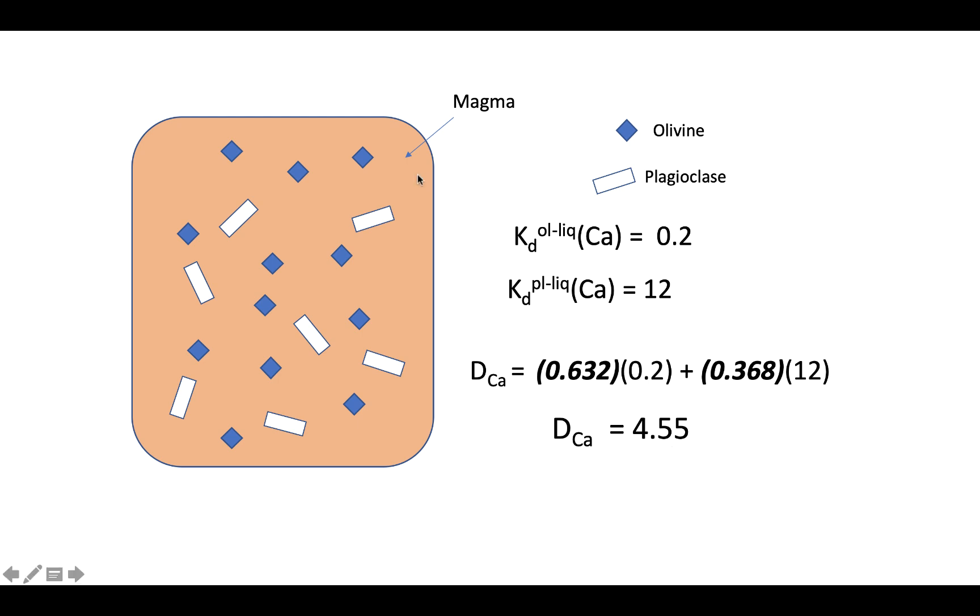Again, however, even though olivine does not absorb very much calcium, the bulk solids, olivine plus plagioclase, will still absorb more calcium in total than the liquid will. So as the system crystallizes, calcium will be depleted in the residual liquid. With most of the calcium going into solid phases, of those solid phases, the olivine will absorb almost none of the calcium. Most of it will go into the plagioclase feldspar.